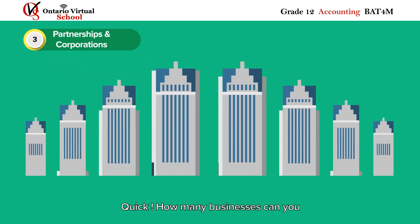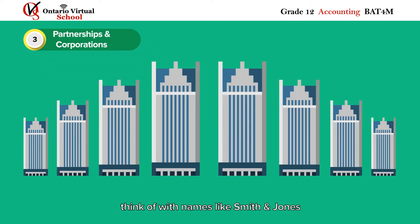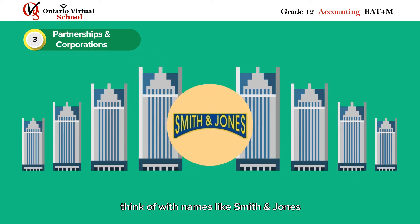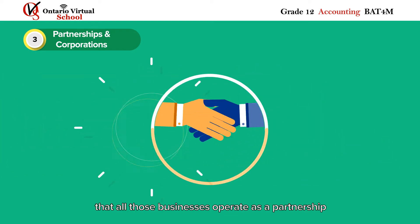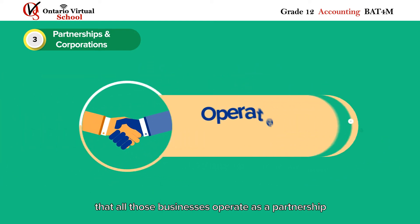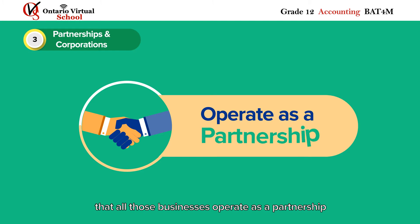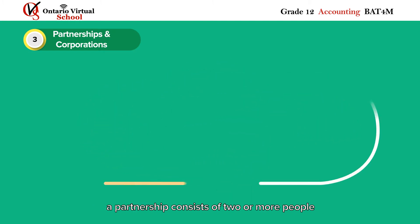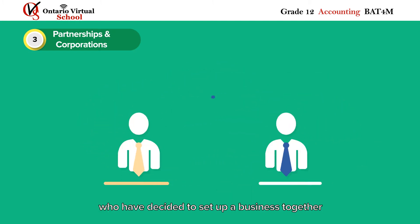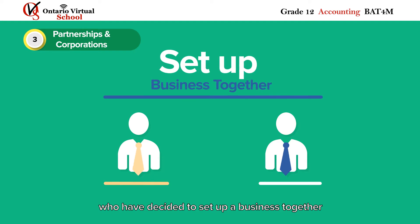Partnerships and corporations. How many businesses can you think of with names like Smith and Jones? Chances are pretty good that all those businesses operate as a partnership. In business terms, a partnership consists of two or more people who have decided to set up a business together.